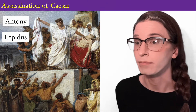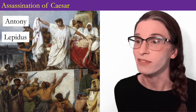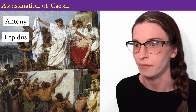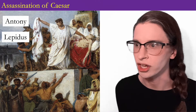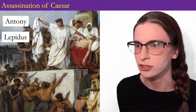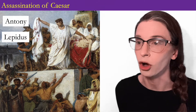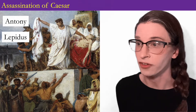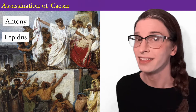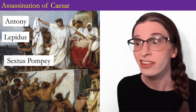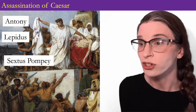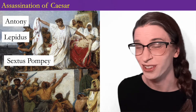Caesar's will is read publicly. In it, Caesar donates much of his land to the public and gives 300 sesterces cash to every citizen. The people are moved by Caesar's generosity and riot against the Senate, encouraged by Antony and Lepidus. Brutus and Cassius flee Rome. Lepidus makes himself Pontifex Maximus to replace Caesar and leaves to fight a war in Spain against Pompey's son, Sextus Pompey. War is spreading against the younger Pompey and against the conspirators, which suits the warlords Antony and Lepidus just fine.